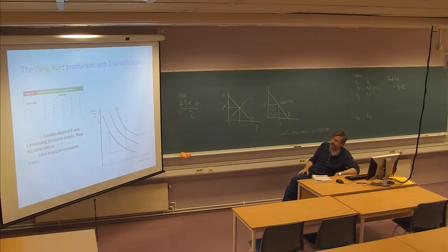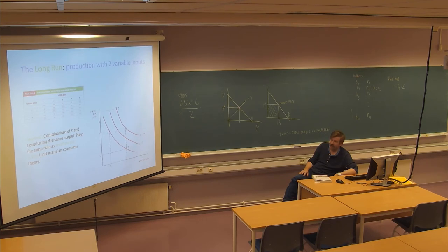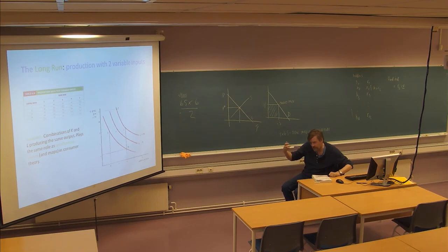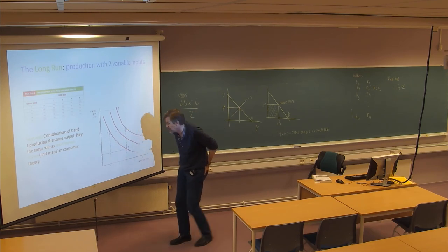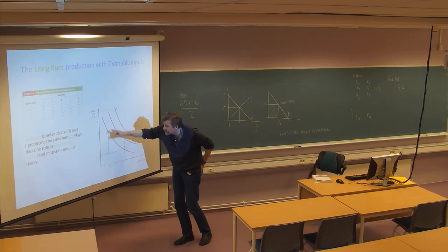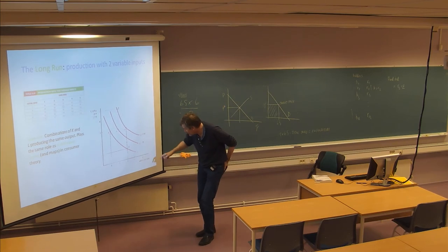Now here is the long-run situation where we look at two variable inputs — both capital and labor vary. We can construct something similar to the indifference curves from chapters 3 and 4. Here they are called isoquants: a combination of K and L — capital and labor — producing the same output. It's not the same utility, it's the same output. These isoquants can be curves, and moving along such a curve, output stays the same — this one shows an output of 75.